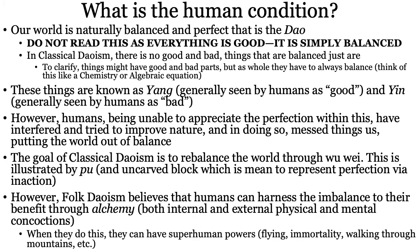This is illustrated by something called a pu — an uncarved block — which I absolutely love because I'm immature. It's meant to represent perfection via inaction. Classical Daoism says we achieve balance and perfection through internal alchemy, which involves meditation or possibly tai chi. Folk Daoism adds that humans can harness the imbalance through external alchemy — elixirs that are created and consumed — to help balance your chi.